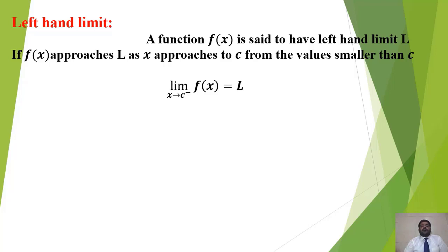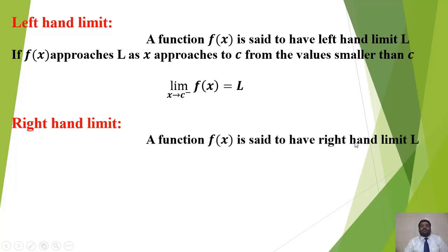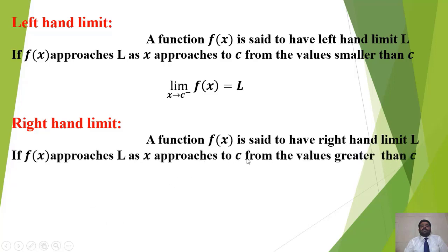Now move towards the right hand limit. A function f(x) is said to have right hand limit l if f(x) approaches l as x approaches c from values greater than c. For example, if c=2, you substitute values greater than 2, like 2.001, 2.1, etc. It is represented as: limit x→c⁺ f(x) = l. The positive sign represents the right hand limit.